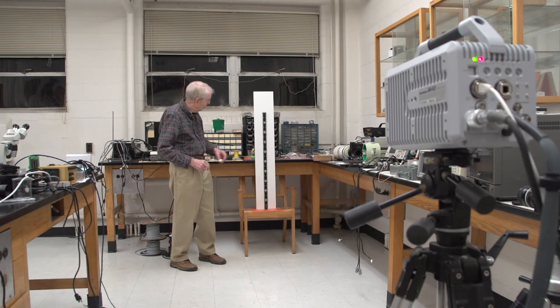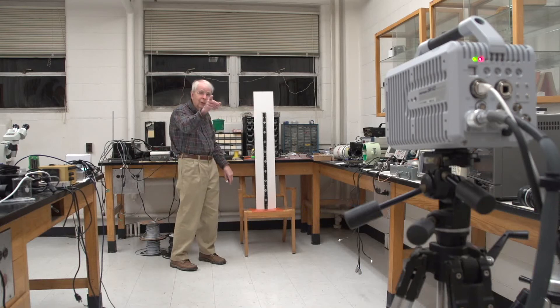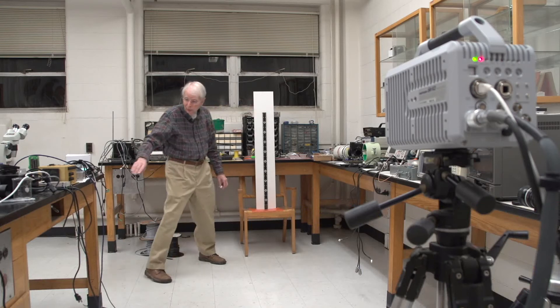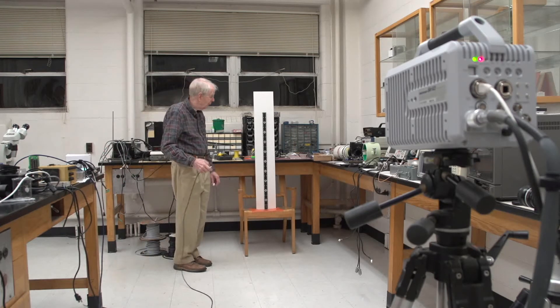So the way it works is I simply drop this in front of that stick. The high speed camera records it after I press this little button here to enable the camera. So press the button, drop the ball, and then we'll go back.